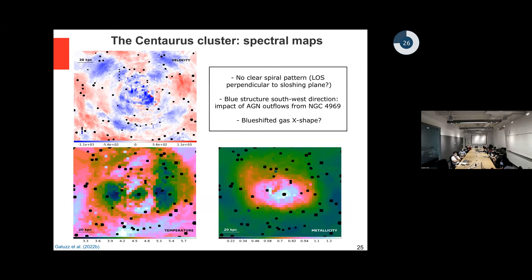We again created velocity spectral maps. The top left panel shows the velocity distribution, which is really complex — there is no clear spiral pattern. It could be that the line of sight is perpendicular to the sloshing plane. The AGN interaction is not as strong as in Virgo. But there is a blue structure with very high velocity that is located near one of the cluster galaxies, NGC 4969, suggesting this could be the interaction directly from that AGN in the system.